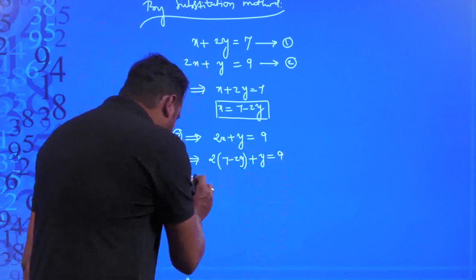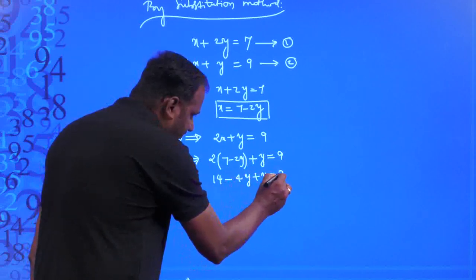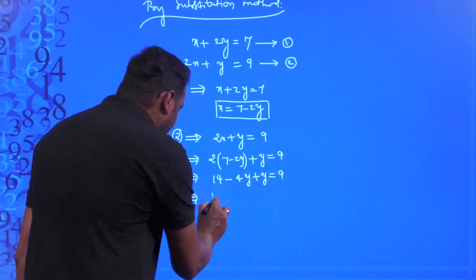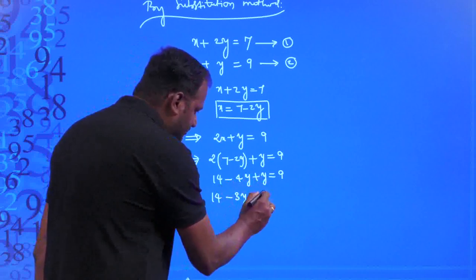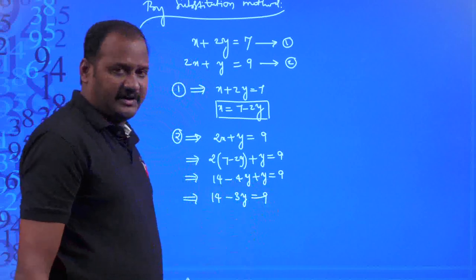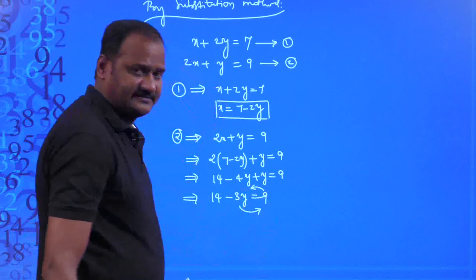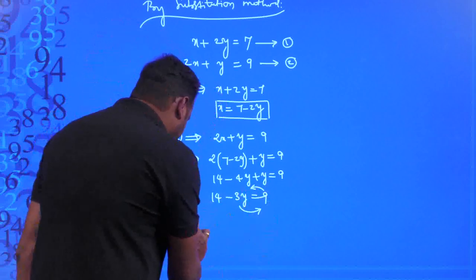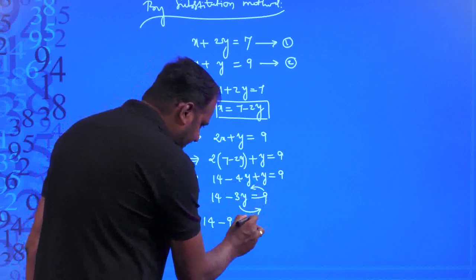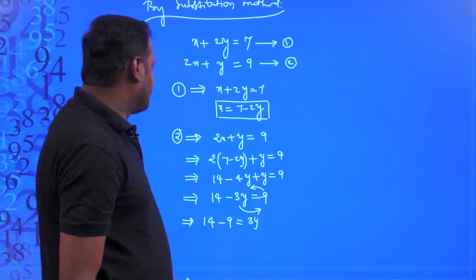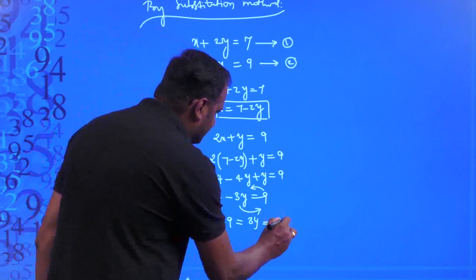Expanding: 14 − 4y + y = 9, which simplifies to 14 − 3y = 9. Transposing: 3y = 14 − 9 = 5. So 5 = 3y, and therefore the value of y is 5/3.